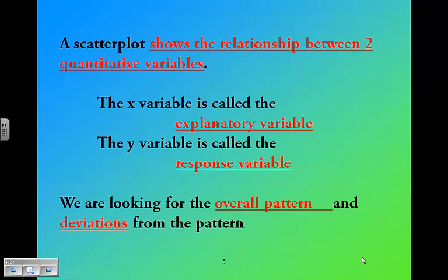The purpose of a scatter plot is to show the relationship between two quantitative variables. It only works for quantitative variables and does not work for categorical. The x variable is called the explanatory, and the y variable is called the response. When analyzing these multivariable relationships, we're looking for the overall pattern and deviations from that pattern.